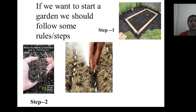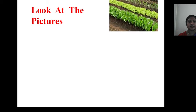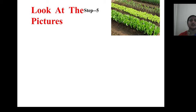Step 3: sowing seeds row by row. After sowing seeds, a plant has grown with two leaves.